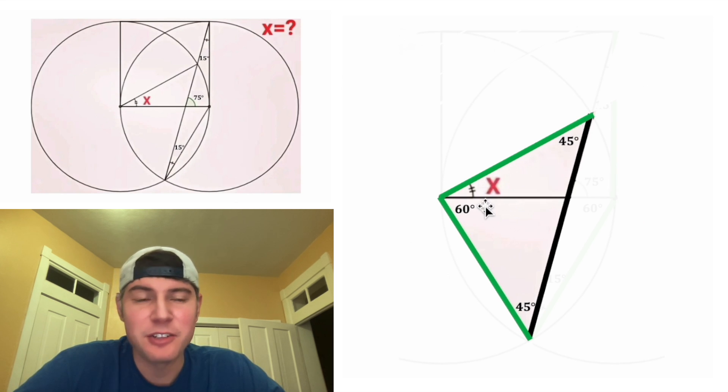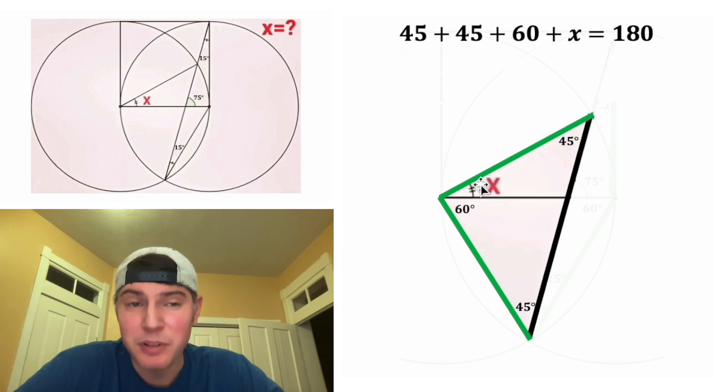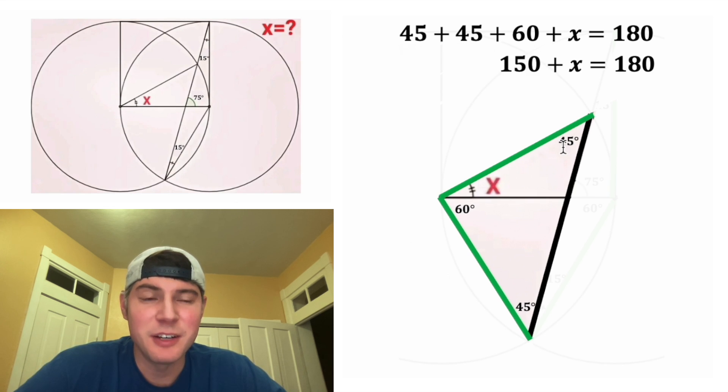Now in this triangle, all three of these angles have to add up to 180 degrees. So we know that 45 plus 45 plus 60 plus X has to equal 180. And 45 plus 45 plus 60 is equal to 150.